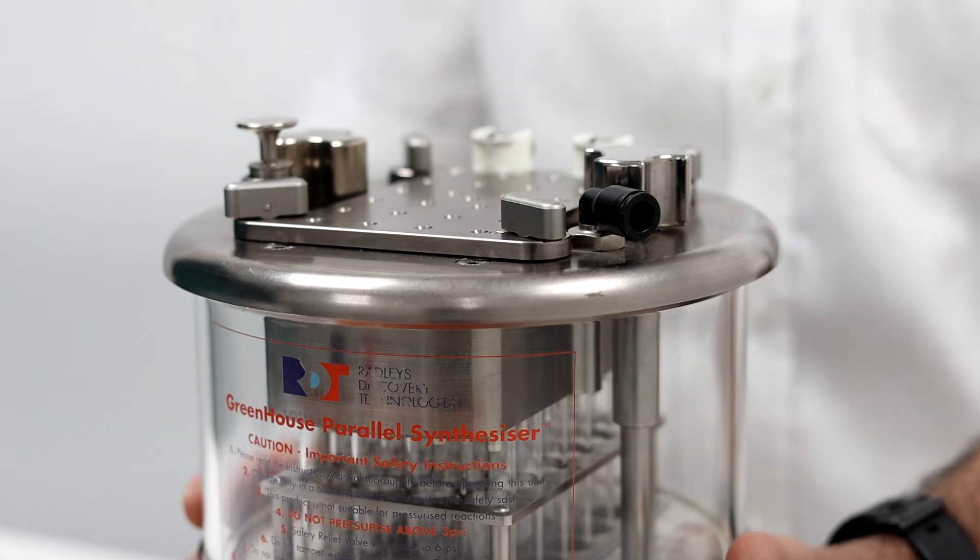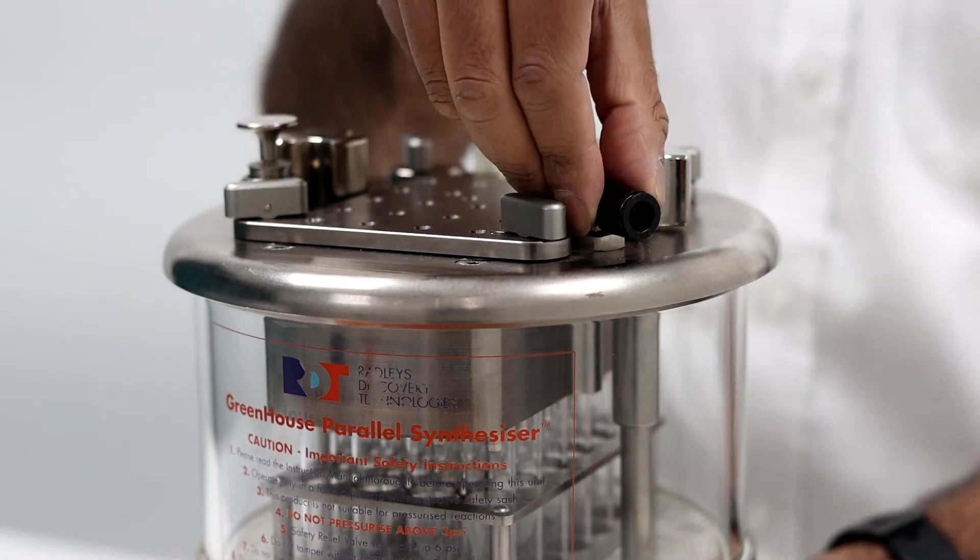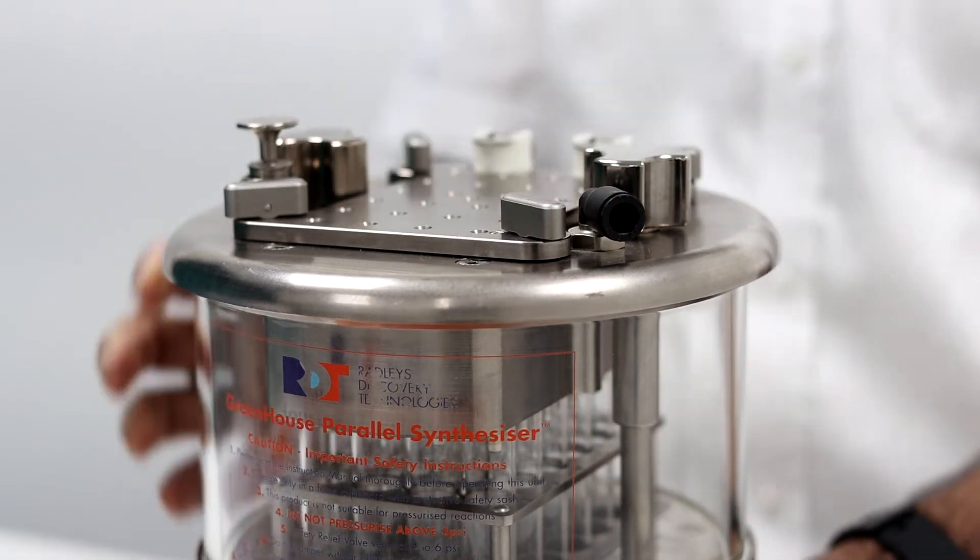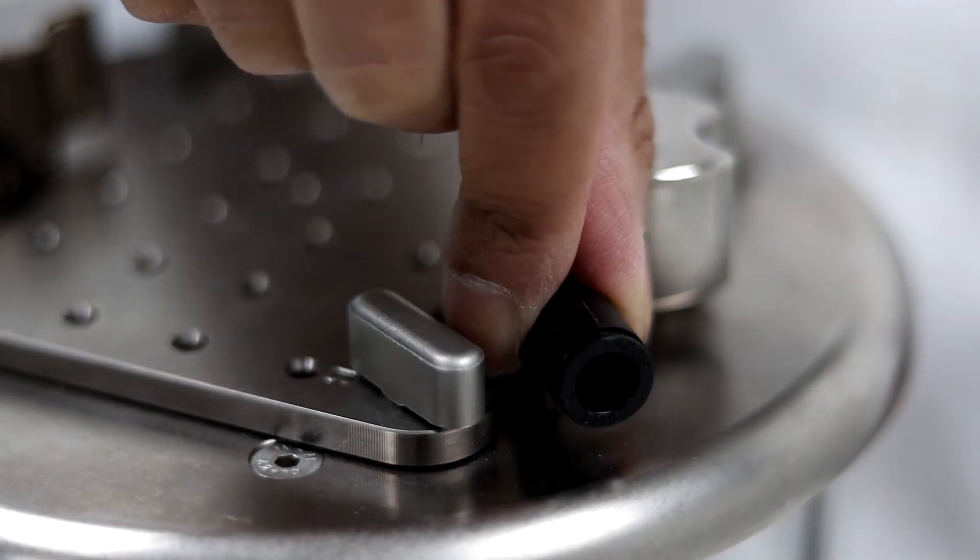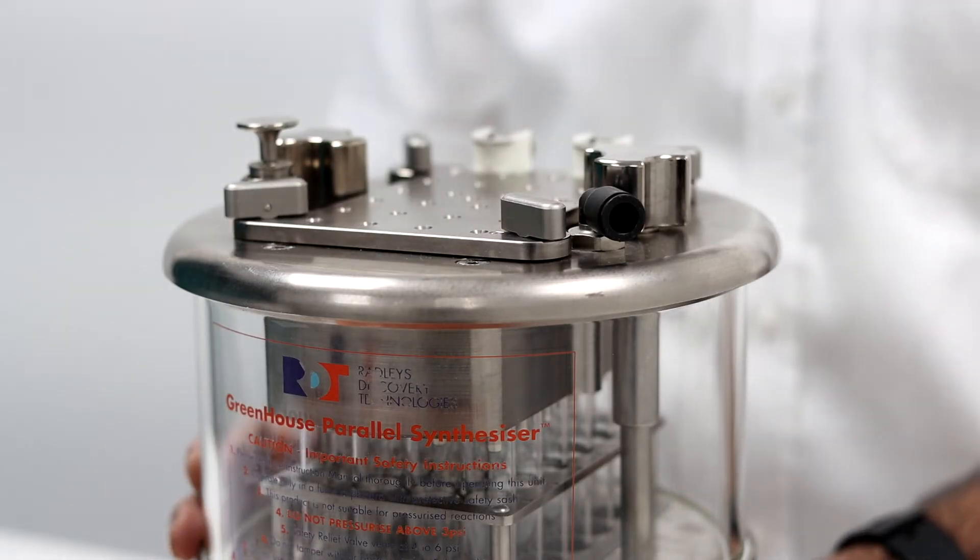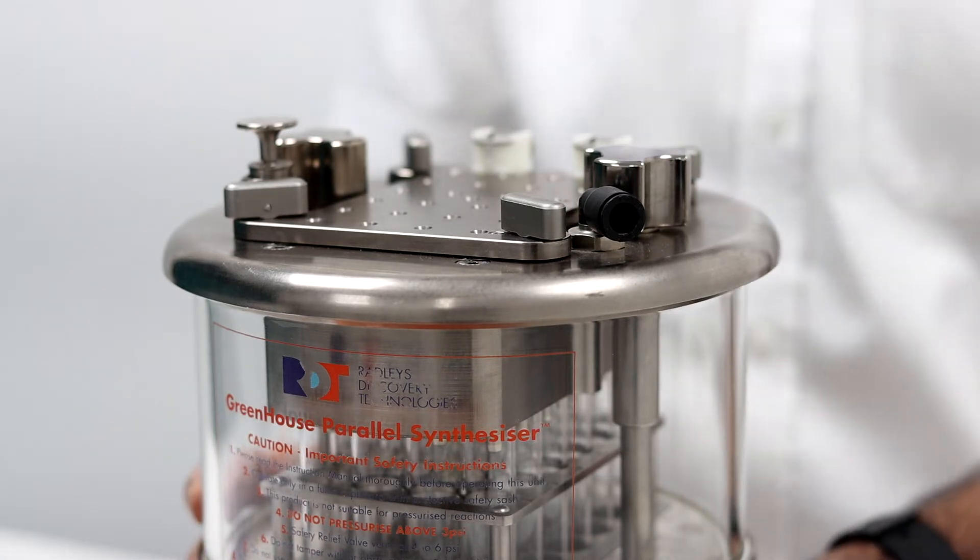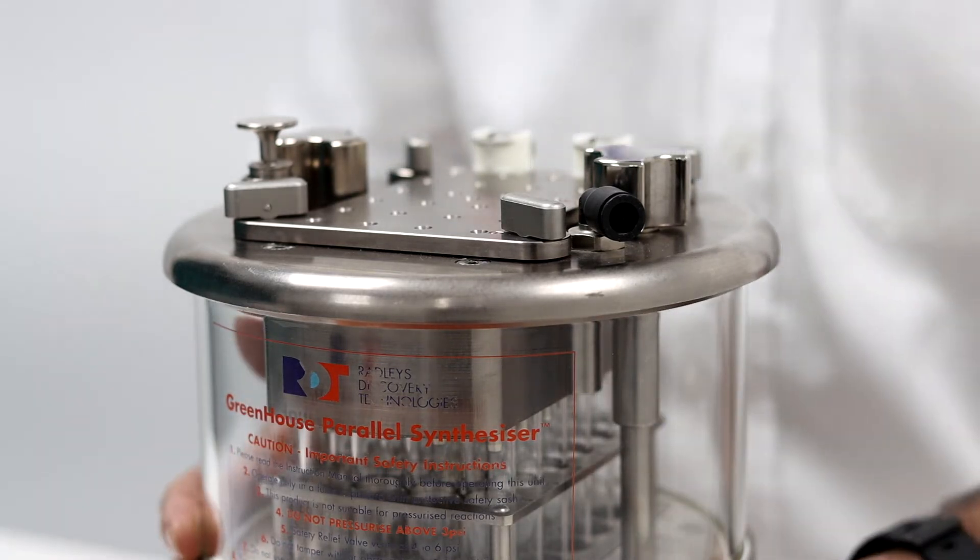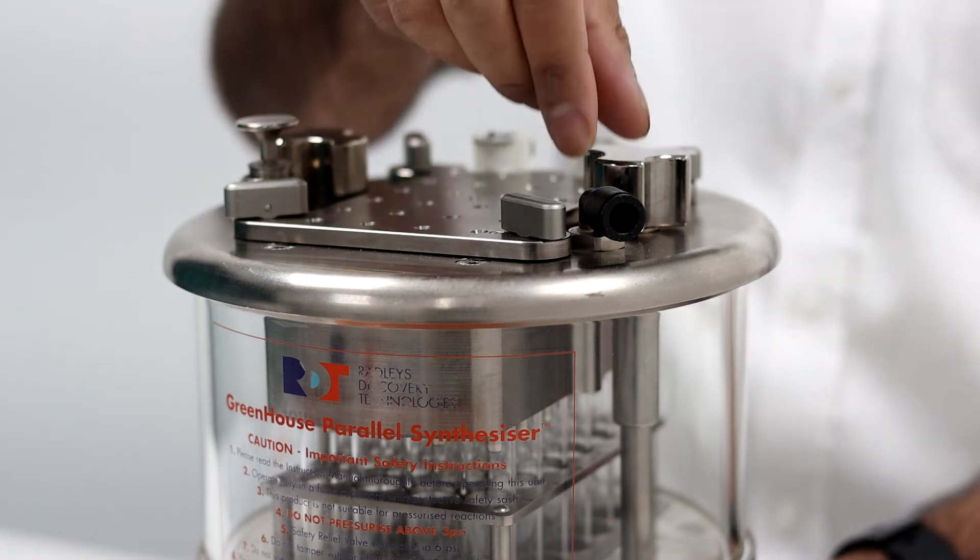You connect your gas source using this hose barb. You might want to use a three-way valve to connect the Greenhouse to a regulated inert gas supply and a vacuum source for purging. By switching three times between the vacuum and inert gas you can purge air from the system.